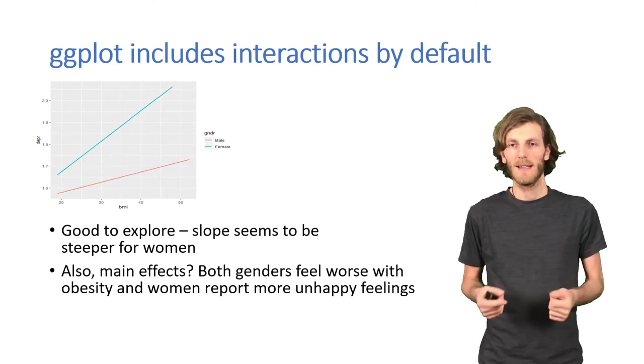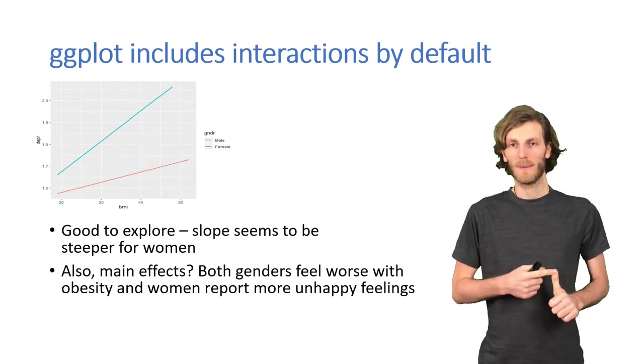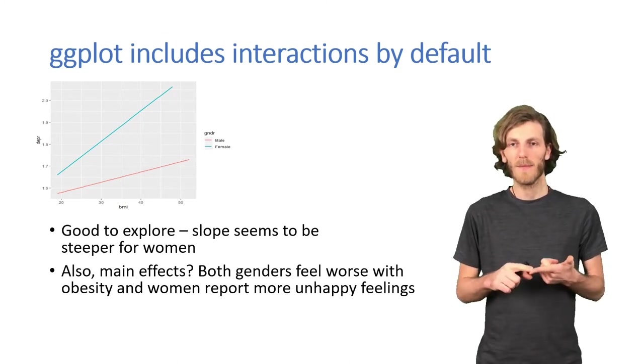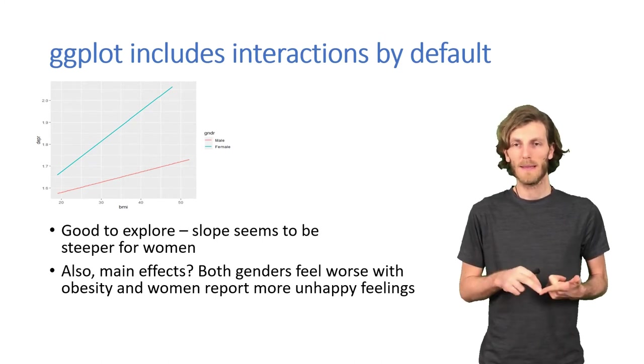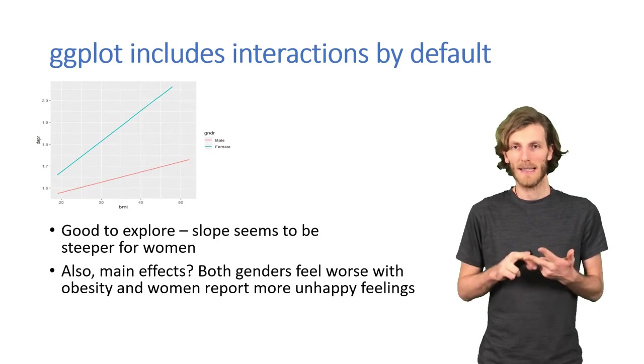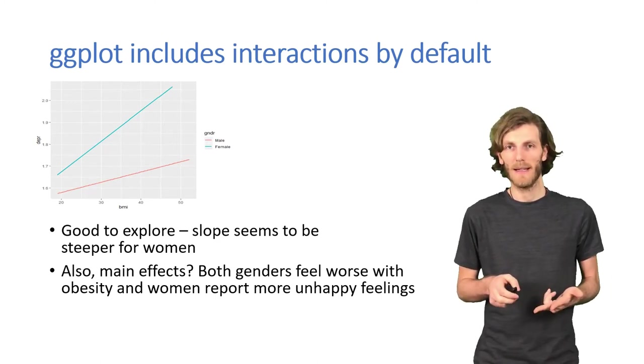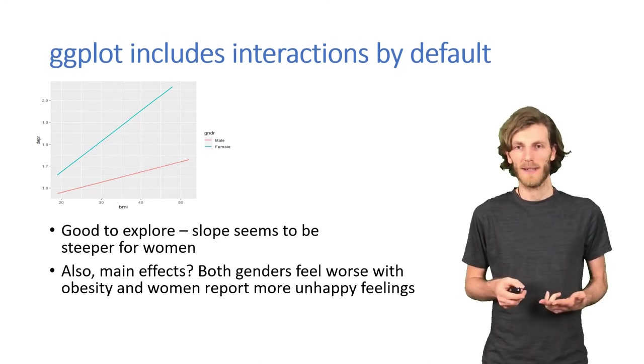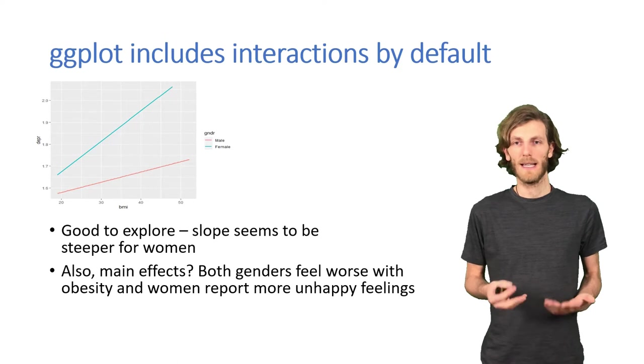But which of these effects are actually significant? So there are three effects. Women might be more prone to depression than men. Obesity might be associated with depression. And there might be an interaction indicated by the fact that the lines are not parallel. To figure out which of these effects are significant, we need to go back to formal testing with the lm function.